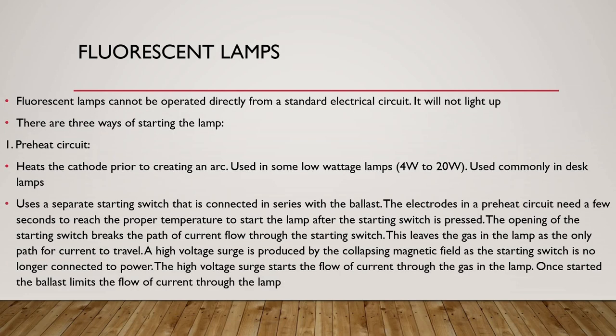Fluorescent lamps cannot be operated directly from the standard electrical circuit — they will not light up. There are three ways of starting the lamp. The first is the preheat circuit. It heats the cathode prior to creating an arc. It is used in low wattage lamps — that would be 4 watts to 20 watts.